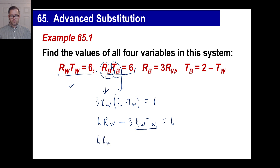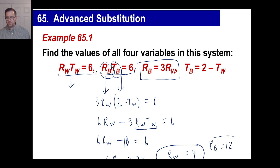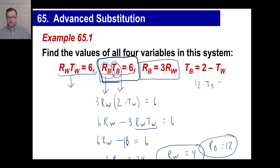So you can go 6 times the rate of the wagon minus 3 times 6 — I'll just write 18 since 3 times 6 is 18 — equals 6. So 6 times the rate of the wagon is 6 plus 18, which is 24, so the rate of the wagon is 4 — the wagon is going 4 miles an hour. The rate of the bicycle is 3 times 4, so rate of bicycle is 12. Then 12 times the time of the bicycle is 6, so the time of the bicycle is one half — the bicycle was ridden for half an hour.